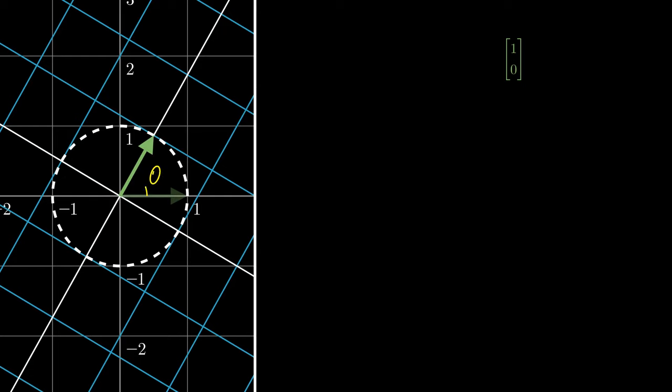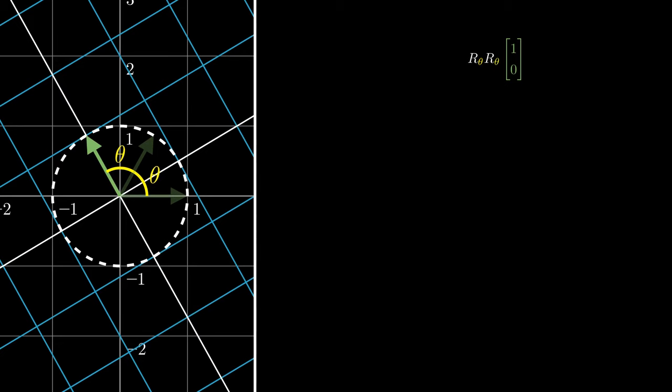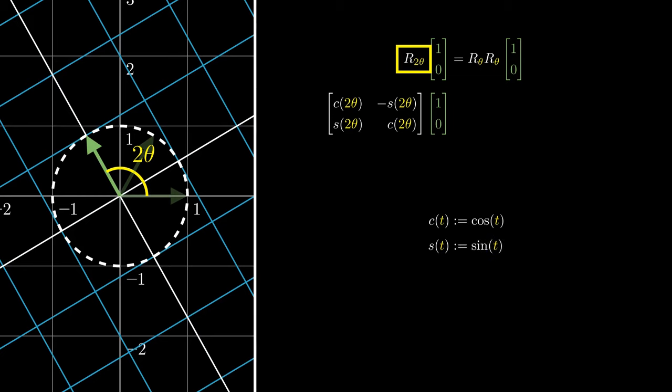But we can rotate a vector around a circle instead. Let's rotate it by an angle of theta radians, followed by another angle of theta radians. The combined effect is a rotation by an angle of 2 times theta radians. What we can now do is expand out the left-hand side as well as the right-hand side. Here, due to space limitations, we are going to abbreviate the cosine of t via c of t, and the sine of t via s of t.